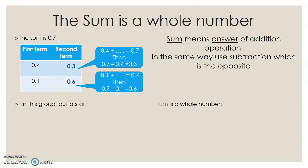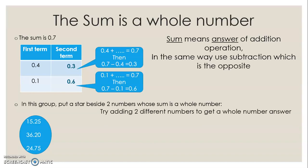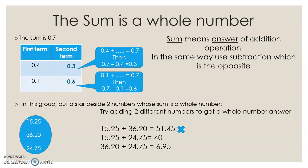Second example: I have a group of numbers and I have to put a star beside two numbers whose sum is a whole number. I try adding two different numbers to get a whole number answer. 15.25 plus 36.20 gives 51.45 — not a whole number, so it's wrong. 15.25 plus 24.75 equals 40 — a whole number, so it's correct. 36.20 plus 24.75 equals 60.95 — not a whole number, so it's wrong. The two numbers whose sum is a whole number are 15.25 and 24.75.